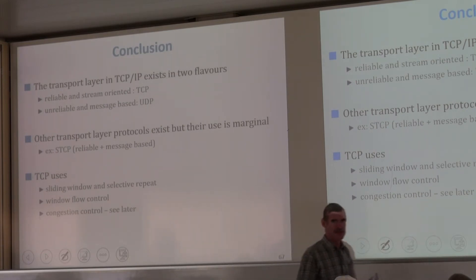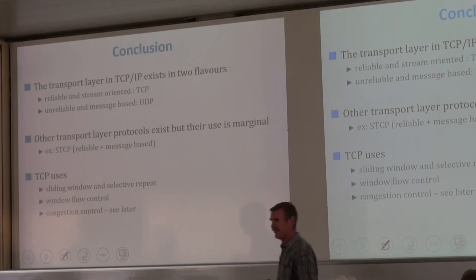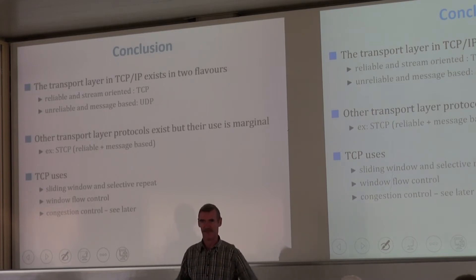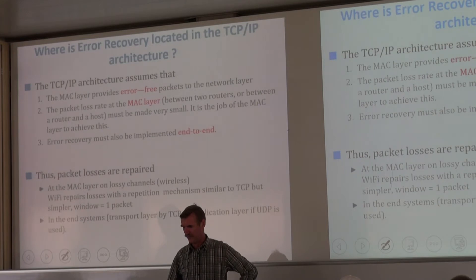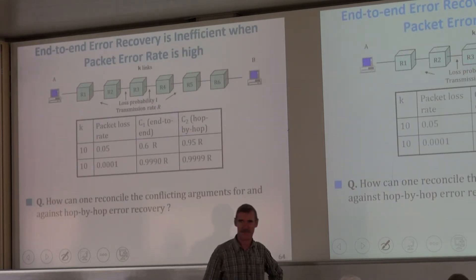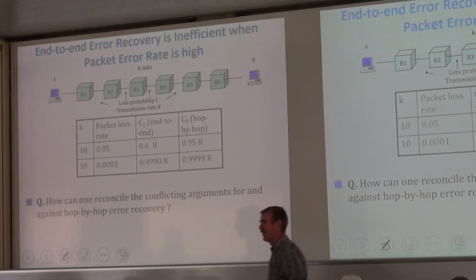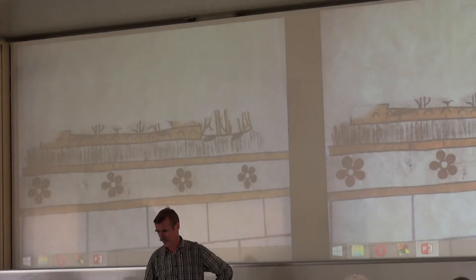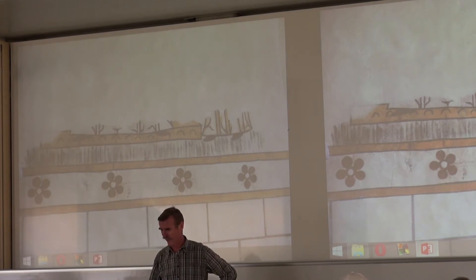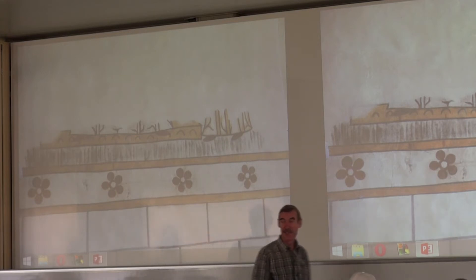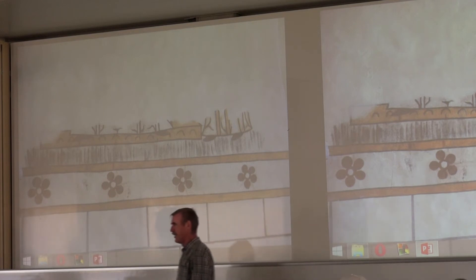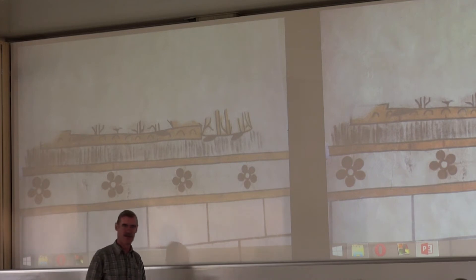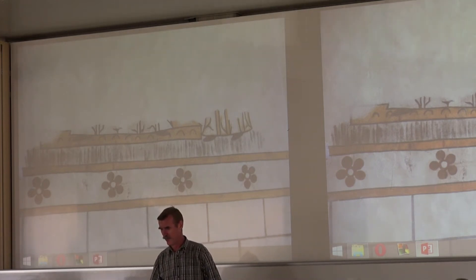That's the end of the TCP and transport layer module. We move to the next topic, which is multicast. In the programming lab — lab three — we ask you to code using IP multicast, so we need to discuss what it is and how it works.